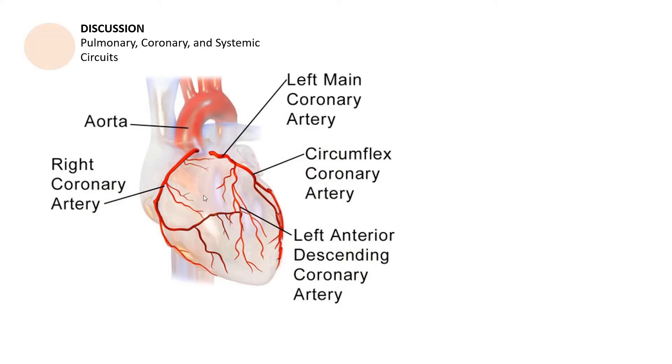The second type of circulation involves these blood vessels here. The familiar aorta, which is the biggest artery, is right here. But we are now going to talk about these arteries. We have the left main coronary artery, the circumflex coronary artery, the right coronary artery, and the left anterior descending coronary artery. These are the blood vessels responsible for coronary circulation. Coronary circulation is the movement of blood through the tissues of the heart.